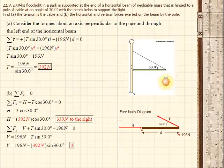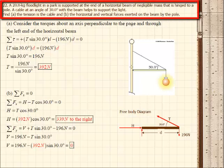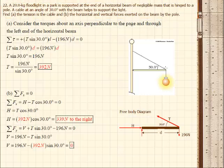We've got a 20 kilogram floodlight, so that's the mass of our floodlight in a park, and it's supported at the end of a horizontal beam of negligible mass that is hinged to a pole. A cable at an angle of 30 degrees, here is our cable, with a beam helps support the light. That's our 20 kilogram light. So that's the mass of the light, not the weight of the light.